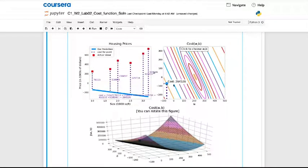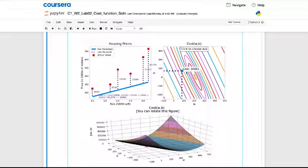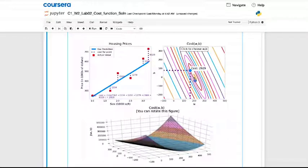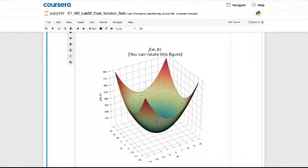In the optional lab, you also can play with an interactive contour plot. Check this out. You can use your mouse cursor to click anywhere on the contour plot and you will see the straight line defined by the values you chose for the parameters W and B. You see a dot appear also on the 3D surface plot showing the cost.